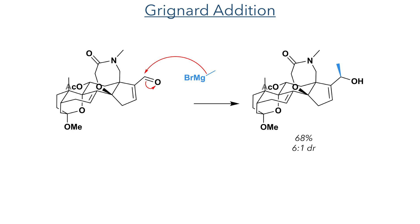With the aldehyde now installed, the next step was a Grignard reaction with methylmagnesium bromide, which produced the target secondary alcohol in a 68% yield with a 6:1 diastereomeric ratio.